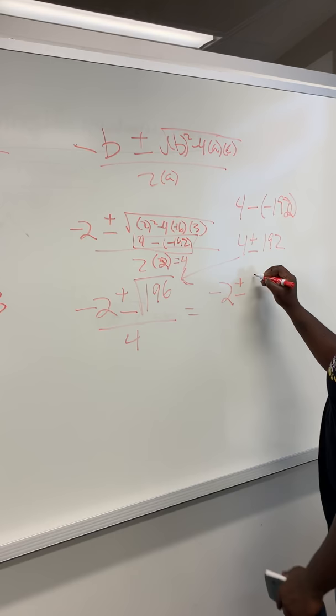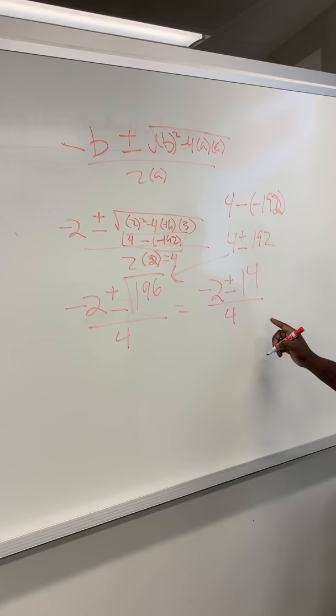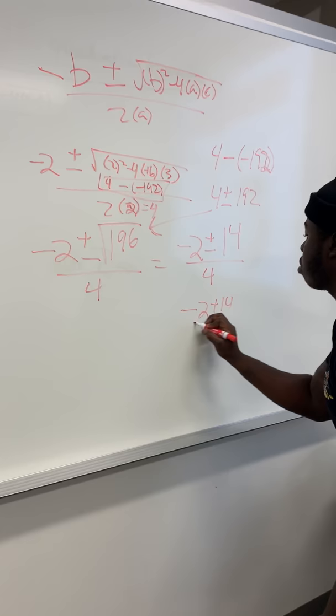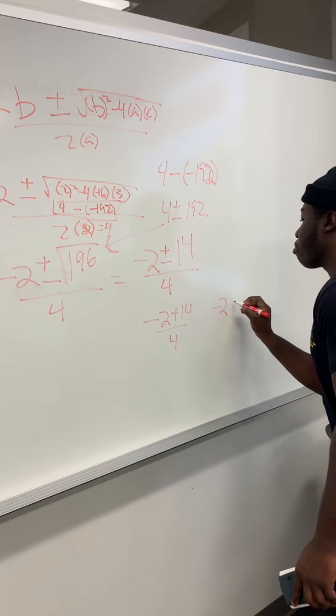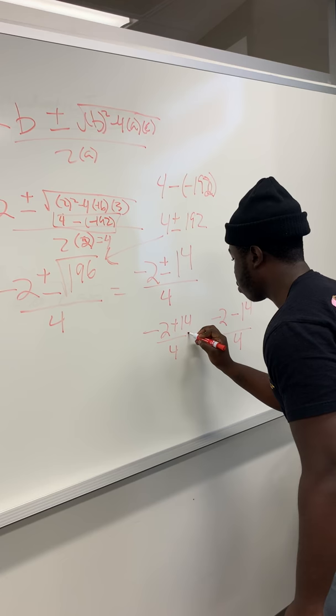So this will turn into negative 2 plus or minus square root of 196, which would be 14, all over 4. So it'll be negative 2 plus 14 over 4 and negative 2 minus 14 over 4.